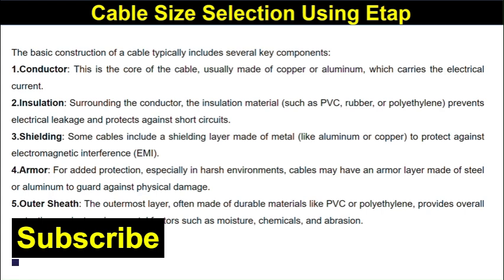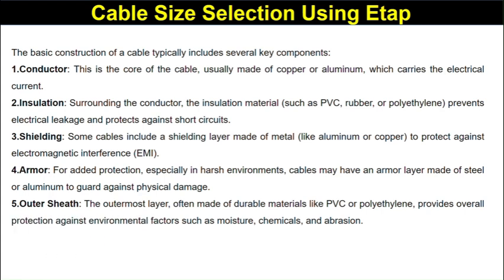Shielding: some cables include shielding made of metal like aluminum or copper to protect against electromagnetic interference. Armoring: for added protection, especially in harsh environments like tunnels, cables may have an armored layer made of steel or aluminum to guard against physical damage. Outer sheet: the outer sheath is often made of durable material like PVC or polyethylene, providing overall protection against environmental factors such as moisture, chemicals, and abrasion.